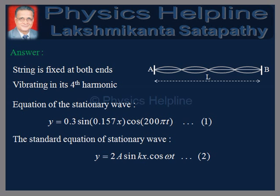For the answer: the string is fixed at both ends and it is vibrating in its fourth harmonic. Therefore, it has four loops as shown in the figure. The equation of the stationary wave is given as y = 0.3 sin(0.157x) cos(200πt). The standard equation of a stationary wave is y = 2a sin(kx) cos(ωt), where k = 2π/λ and ω = 2π/T.